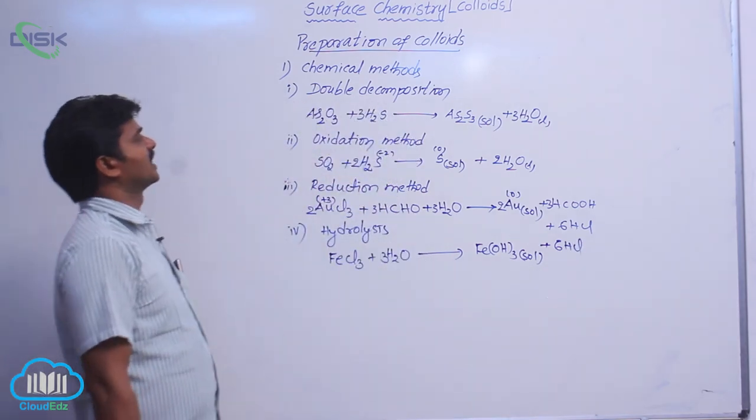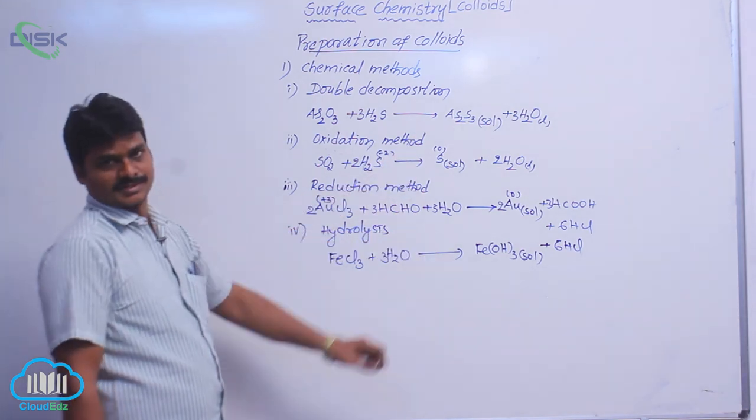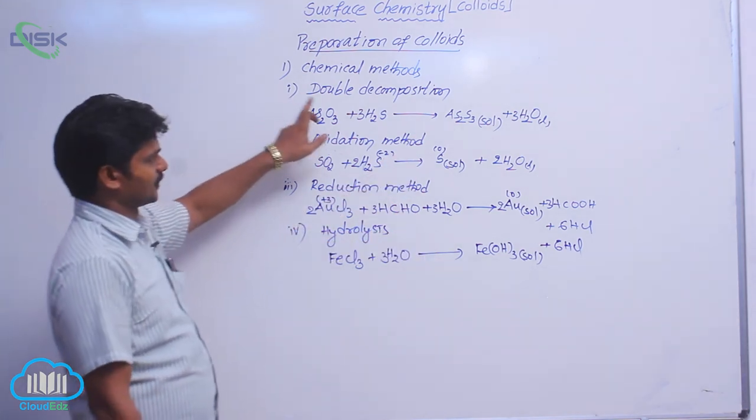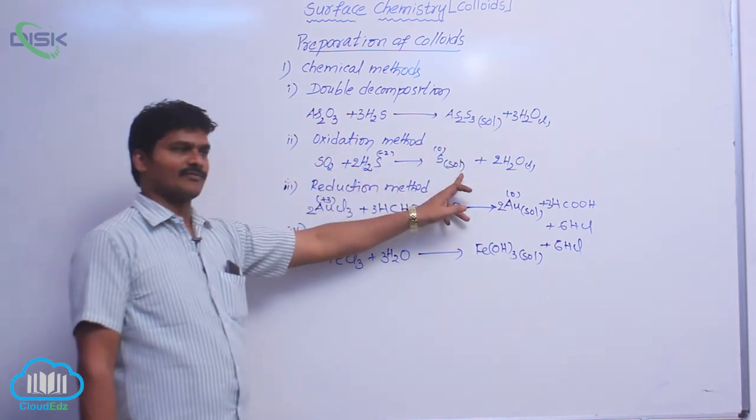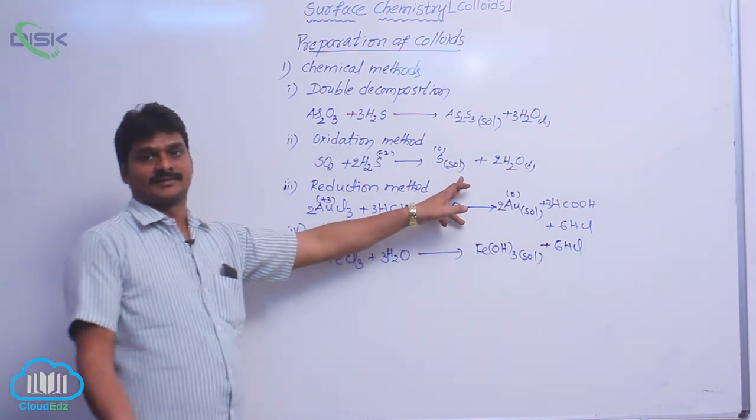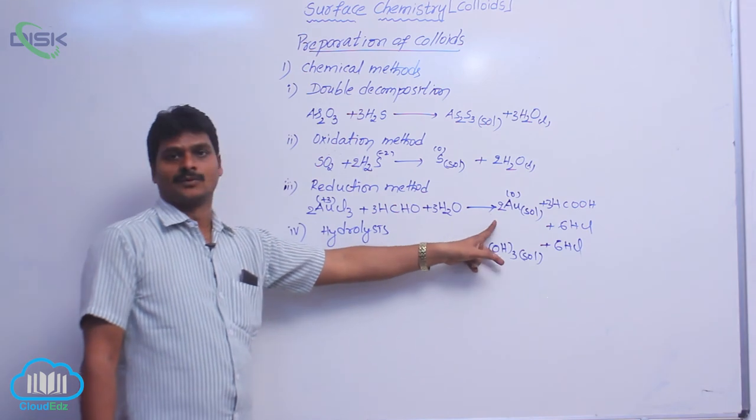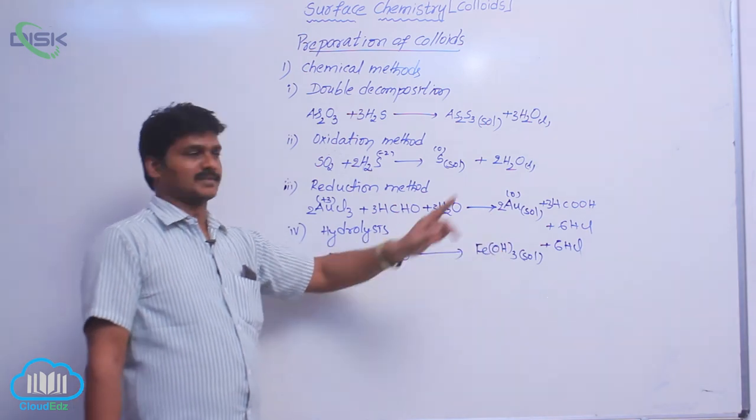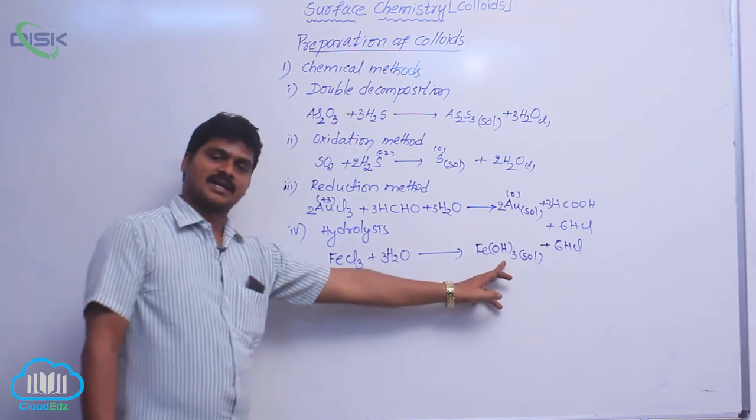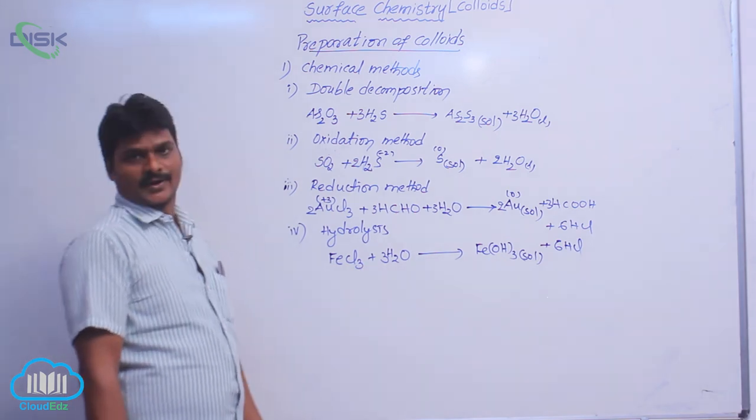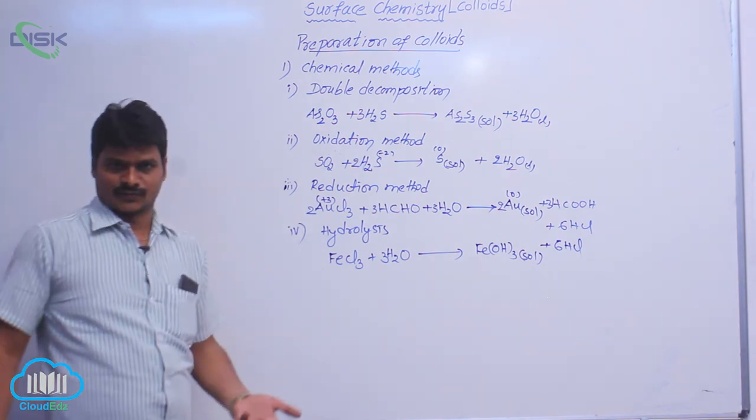These are all chemical methods for the preparation of colloidal solutions. The first method is preparation of arsenic sulfide by double decomposition method. The second one: preparation of sulfur sol by oxidation method. Third one is preparation of gold sol by reduction method. Fourth one is preparation of ferric hydroxide sol by hydrolysis method. These are all chemical methods. First one completed.